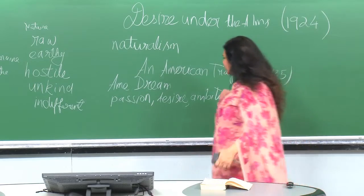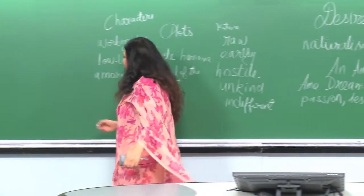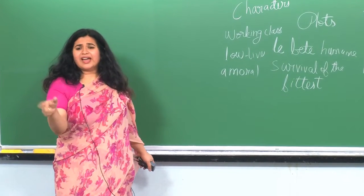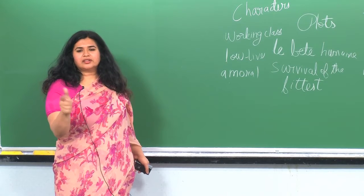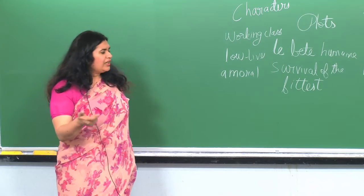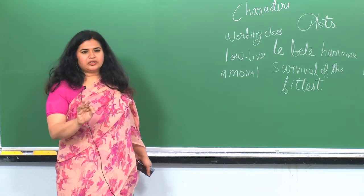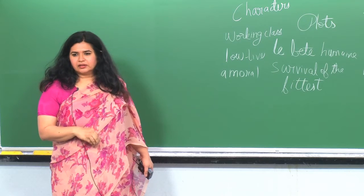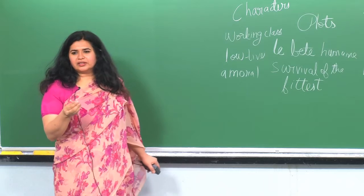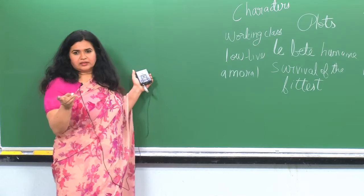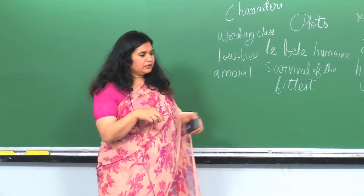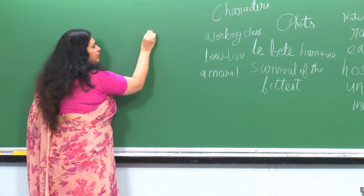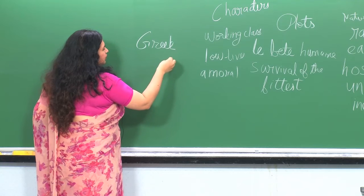A View from the Bridge is not strictly naturalist because other characters are quite noble, and Eddie Carbone was discussed as an ideal tragic hero. The lawyer Alfieri serves as a choric character — a narrator. When we discuss a choric character, we are talking about the broader form of the Greek play.